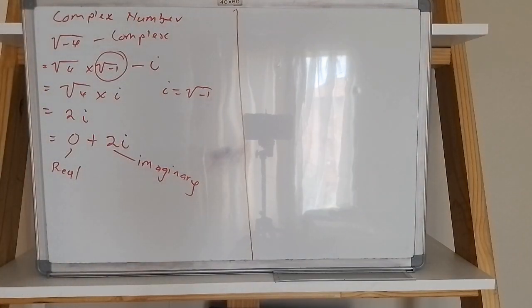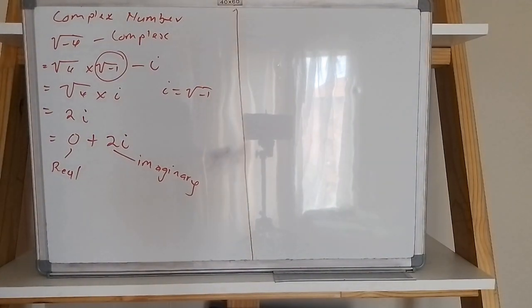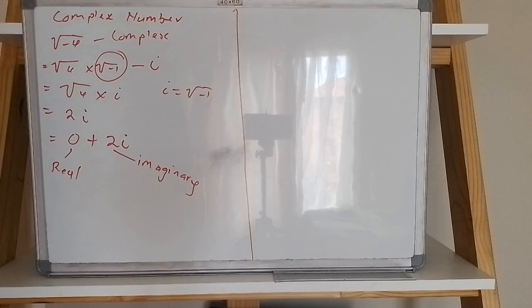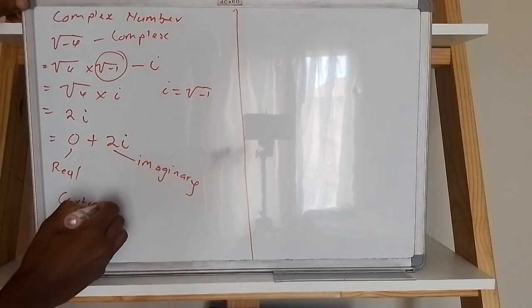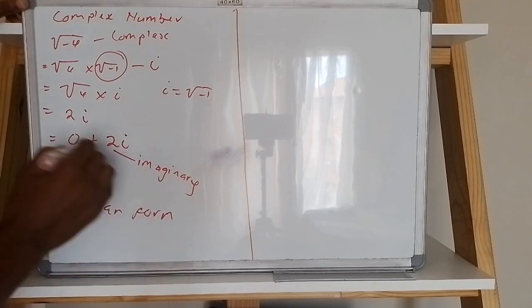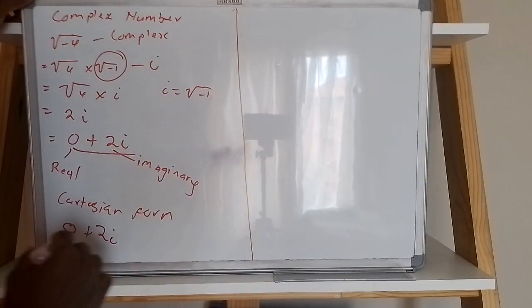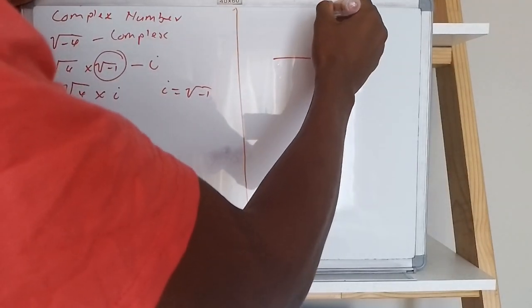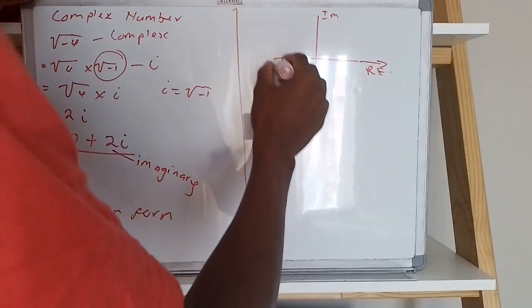We introduced these things last week — addition, subtraction, multiplication, and division of complex numbers. Now we will talk about types of complex numbers, or the different ways we can represent complex numbers. We will start with the cartesian form representation. When we represent a complex number in cartesian form, this is the imaginary part and this is the real part.